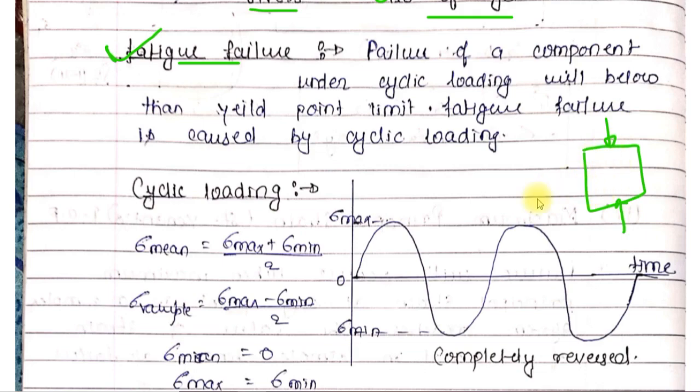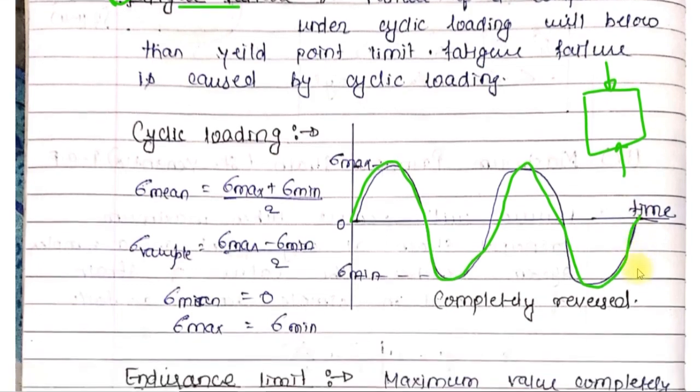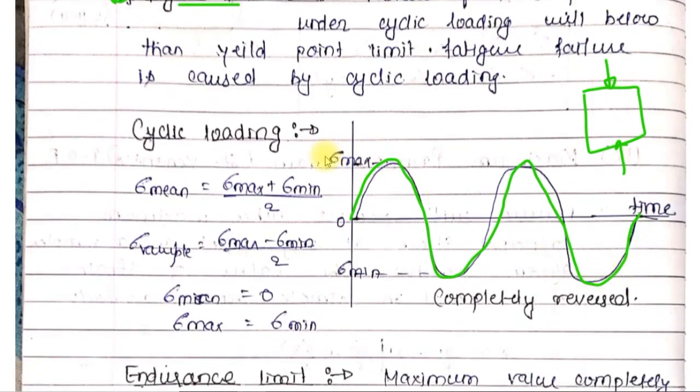This type of loading can be called cyclic loading. When the stress was maximum positive, then it becomes negative. The stress is rapidly increasing and relatively rising. This type is completely reversed loading. There can be many other types as well.